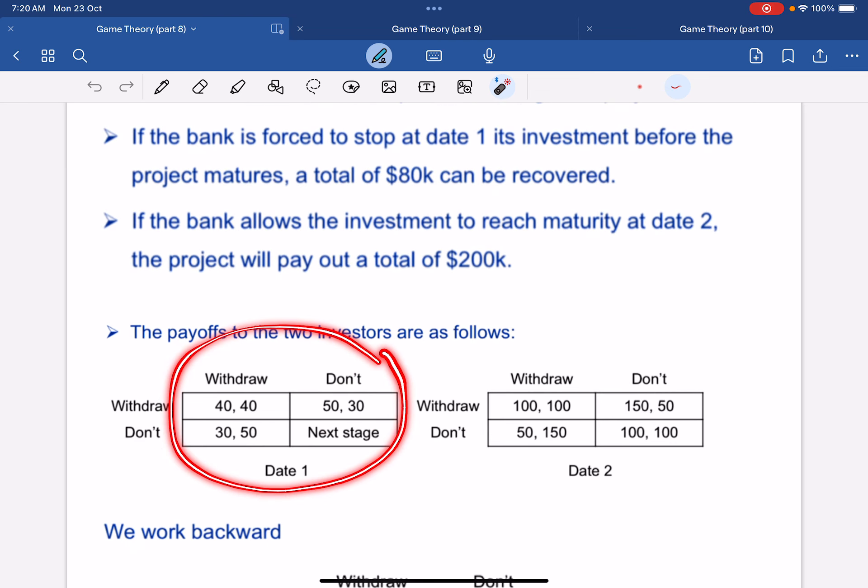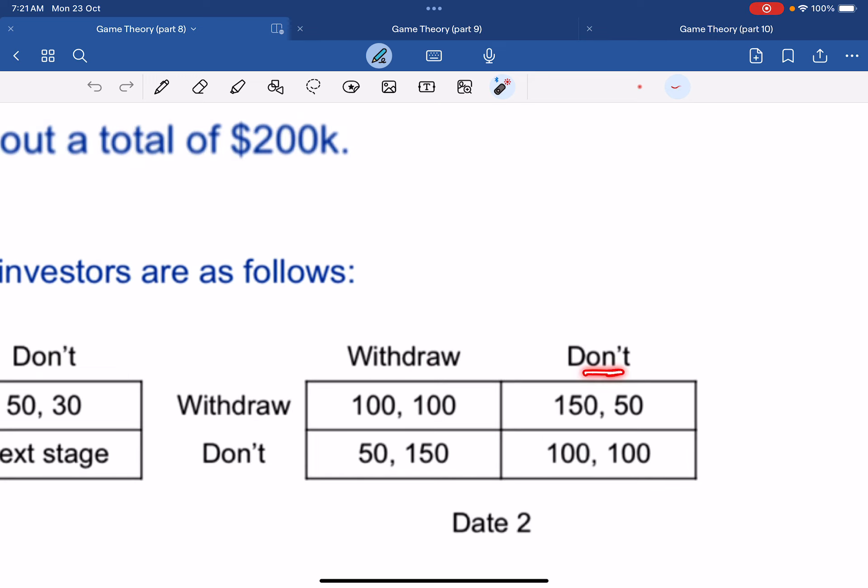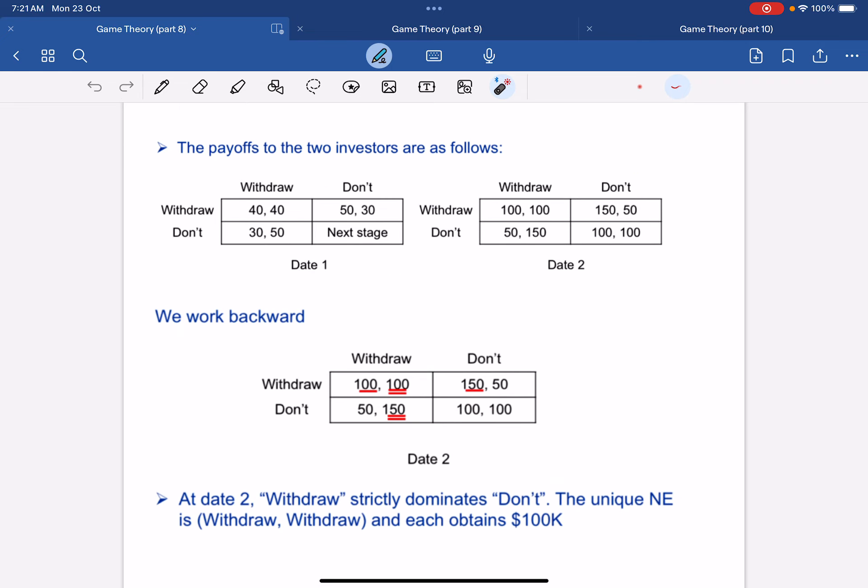This is one simultaneous move game. And this is like a second simultaneous move game, even though it's date 1 and date 2. So, now we get to move on to date 2, where if both now withdraw, then both get $100,000. So, they will already earn money. If one withdraw and one don't, then the one that withdraw earns even more. And the one don't break even. So, it's still not too bad. And if they both don't, they still both earn $100,000 because the project matures already. And so, we can now work backwards and we need to solve this simultaneous move game first.